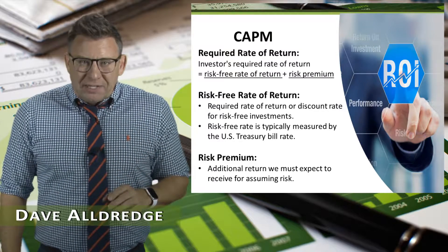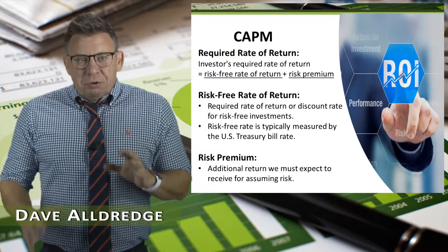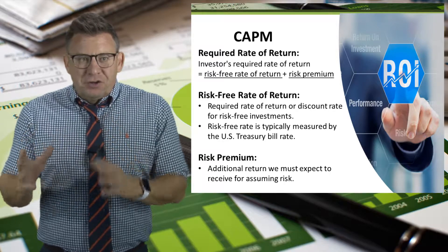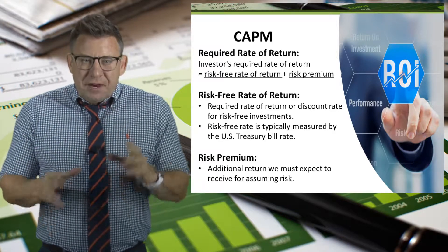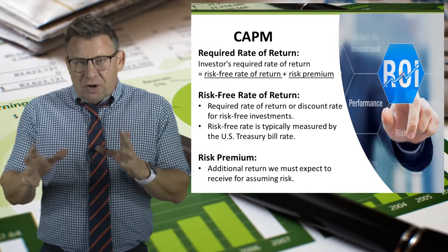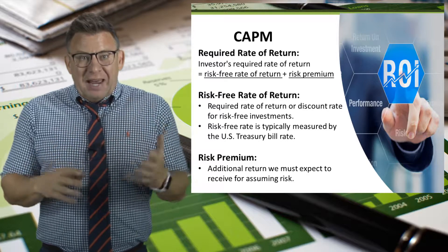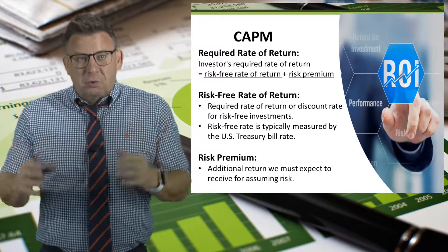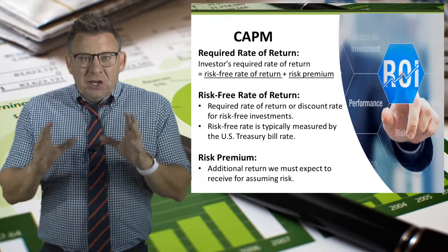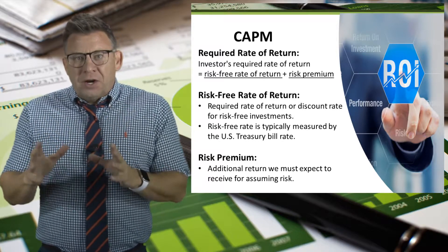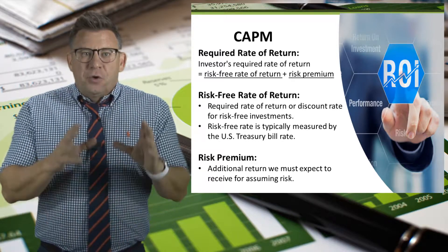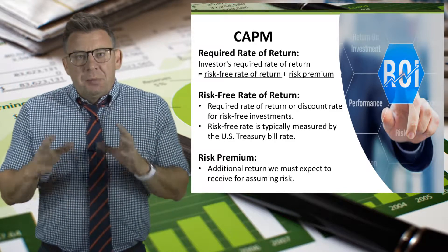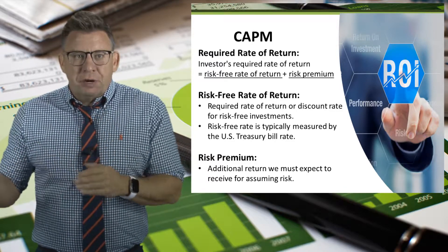The capital asset pricing model provides an intuitive approach for thinking about the return that an investor should require on an investment, given an asset's systemic or market risk. It looks at an investor's required rate of return as the risk-free rate of return plus a risk premium.